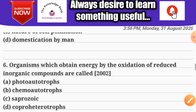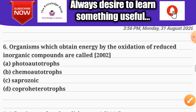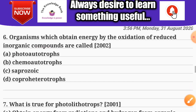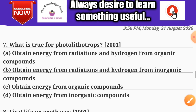Question number six: organisms which obtain energy by the oxidation of reduced inorganic compounds are called — Options: A) photo autotrophs; B) chemo autotrophs; C) saprozoic; D) copro heterotrophs. The correct answer is option B — chemo autotrophs.